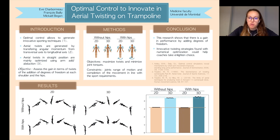This is where optimal control comes to the rescue. It is a safe method to generate innovative and high-performance techniques. However, aerial twists have mainly been optimized using arm movements in the frontal plane. The objective of this study is to assess the gain in terms of twists from the addition of one degree of freedom at each shoulder and at the hips.